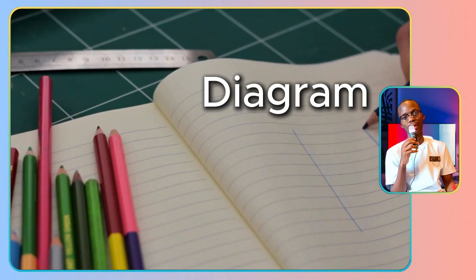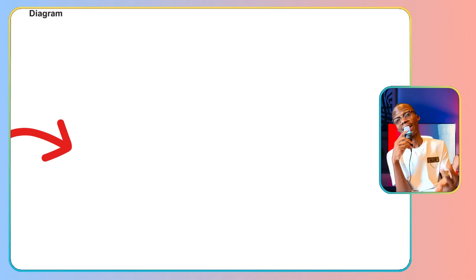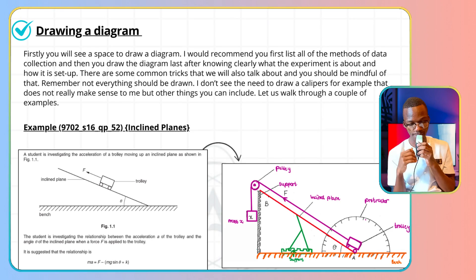We're going to be talking about drawing a diagram. In the methods of data collection, there's always one compulsory mark for drawing a diagram. If you look at your paper, you'll be given a little space for you to draw a diagram that best illustrates how that experiment should be conducted or designed. So firstly, you'll see a space to draw a diagram, like I mentioned. I would highly recommend that you first list all the methods of data collection first, and then you draw the diagram later. Because I think if you draw the diagram last, you have much more of a clearer picture as to what the question is actually about, and you can therefore be able to draw a very reasonable diagram.